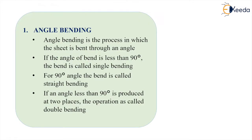Angle bending is the process where the sheet is bent at a required angle. If the angle of bend is less than 90 degrees, it is known as single bending. For 90 degrees, it is known as straight bending. If the angle is less than 90 degrees and produced at two places, the operation is known as double bending.